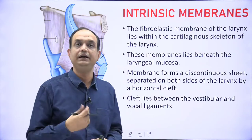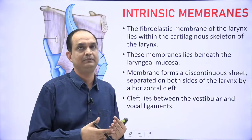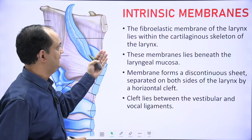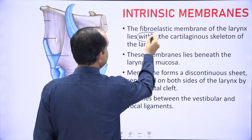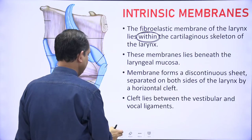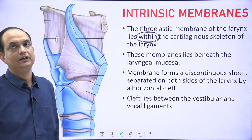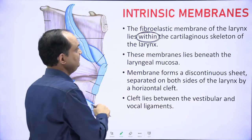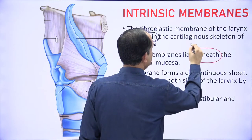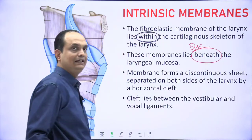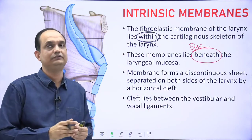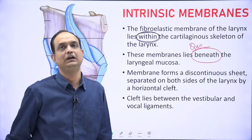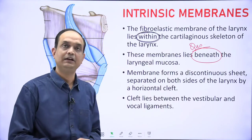Now for the intrinsic membranes — I mentioned there are two: the quadrangular membrane and conus elasticus. The fibroelastic membranes of the larynx lie within the cartilaginous framework of the larynx. Whenever you read about intrinsic membranes, keep in mind that they lie inside the larynx, beneath the laryngeal mucosa. In a cross-section of the larynx, the innermost layer is the mucosal lining, and just below the mucosa you find these fibroelastic membranes.